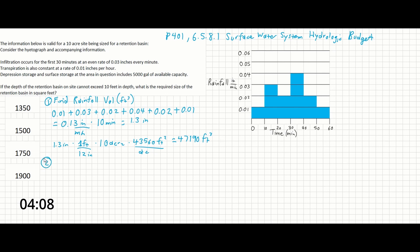2. Let's look at infiltration next. So that's going to be equal to 0.03 inches every minute times, it says, for the first 30 minutes. So let's multiply by 30 minutes.